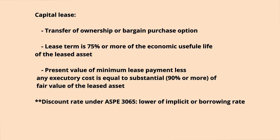The criteria are: transfer of ownership or bargain purchase option at the end of the lease term; lease term is at least 75% of the economic life of the asset; and present value of minimum lease payments is at least 90% of the fair value of the lease asset. For the present value calculation, the discount rate under ASPE 3065 is the lower of the implicit rate and the incremental borrowing rate — so be careful and choose the lowest rate. If none of these criteria are met, it is an operating lease.